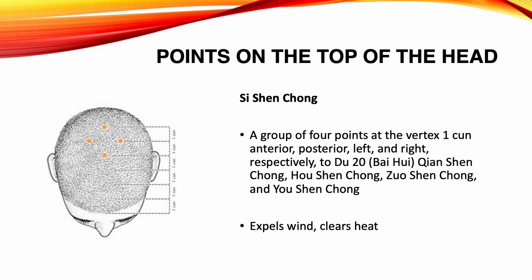Du 22, a group of four points at the vertex — one, two, anterior, posterior, left and right respectively to Du 20. Functions: expels wind, clears heat. Indications: headache, dizziness, insomnia, seizures, convulsions in children.